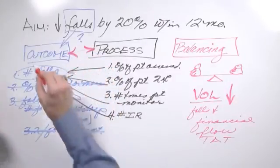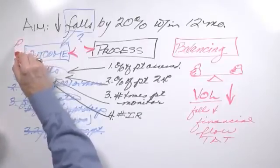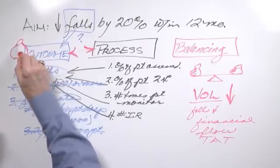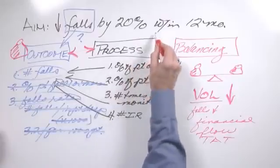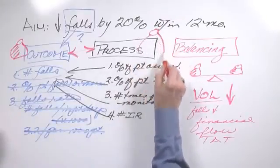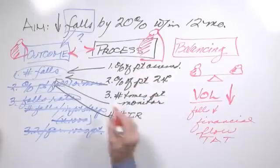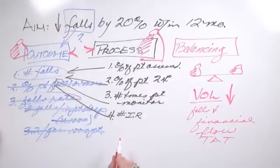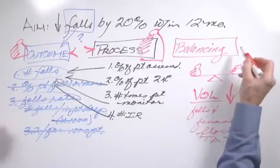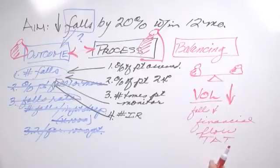By and large, what you're going to have are a few of these outcome measures. You're going to have more of these process measures. There's going to be more of these. Why? Because there's more processes involved affecting a single outcome. And then again, you're going to have smaller number of balancing measures if you decide they're relevant.